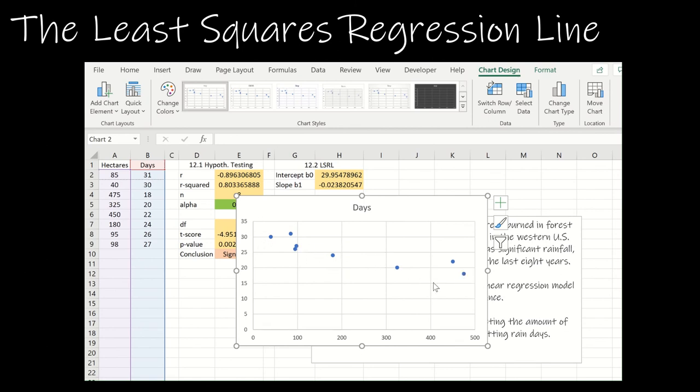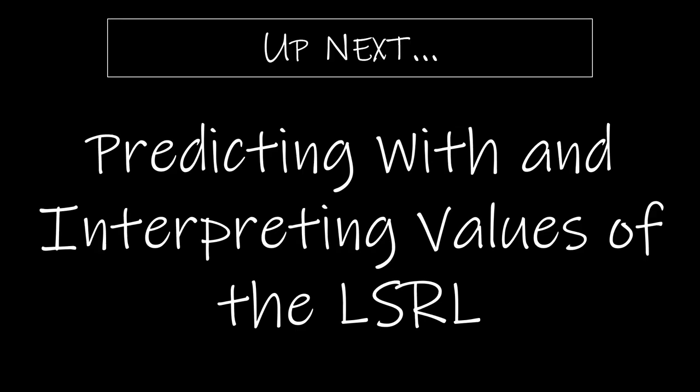Up next we want to take a look at how we can predict values using the least squared regression line and how we can interpret both the slope and the intercept.